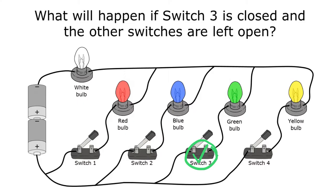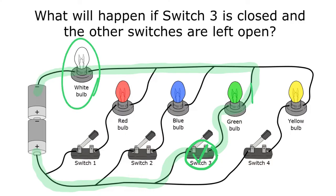It's very important when you answer questions like this that you're careful and you always start at the battery and trace the whole path through the switch that's going to be closed and back to the other side of the battery. It's not just the green bulb — the white bulb and the green bulb are both going to turn on when switch 3 is closed, because they're both along the path electricity takes from one side of the battery through switch 3 and back to the other side.